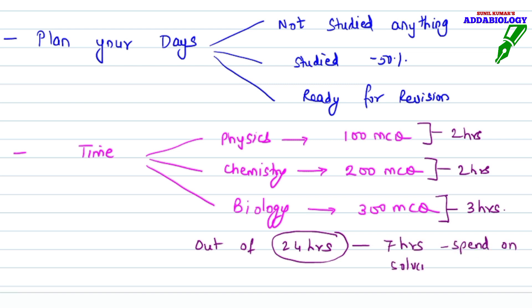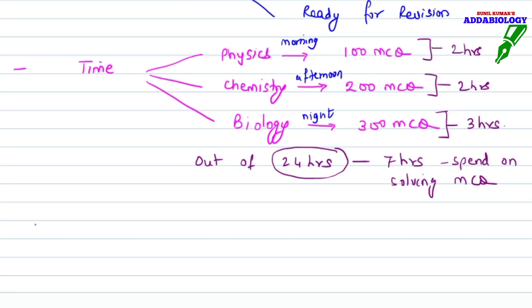Out of 24 hours in a day, no matter whatever comes across in your life, 7 hours you have to spend in solving MCQs. If you do this, it will be very helpful. I suggest physics in the morning, chemistry in the afternoon, and biology at night time like 9 to 12 - that will help you remember everything. You can plan your days accordingly.